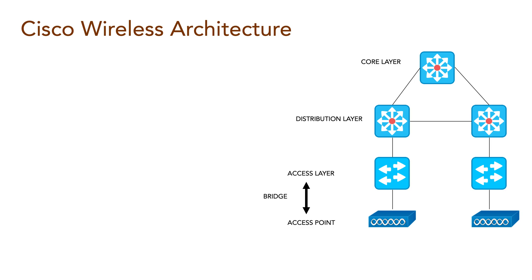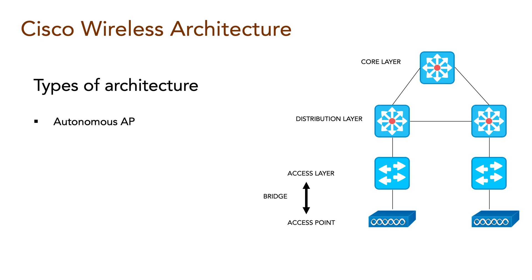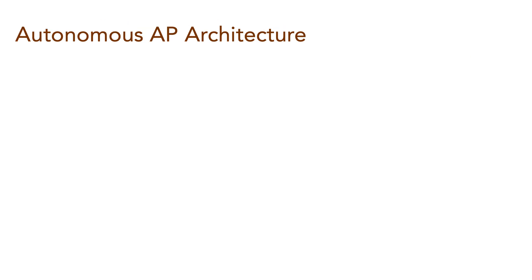There are three different Cisco wireless architectures that we can use in our network: Autonomous AP, cloud-based, and split MAC architecture. Let's go ahead and look at the first one — Autonomous AP.